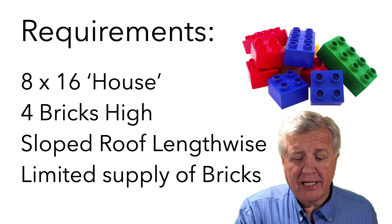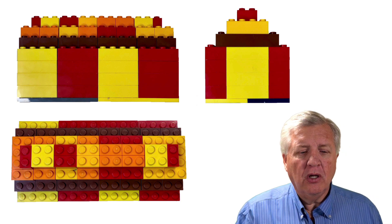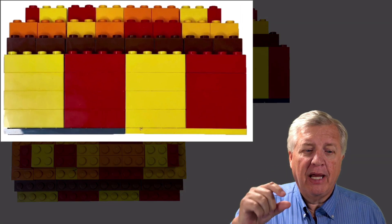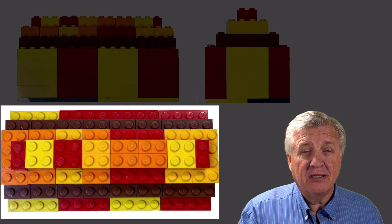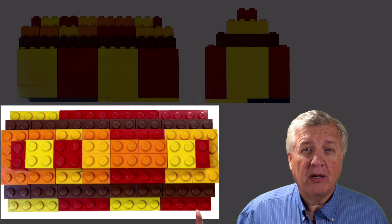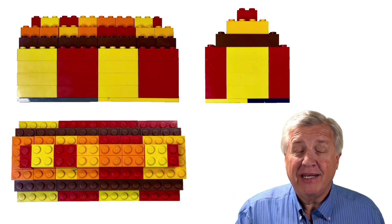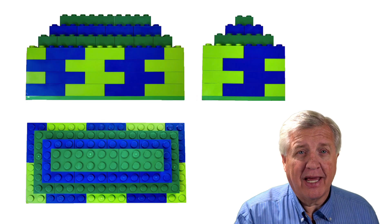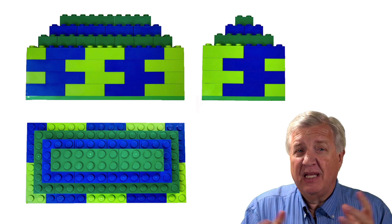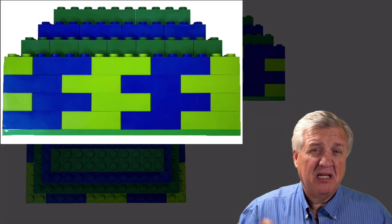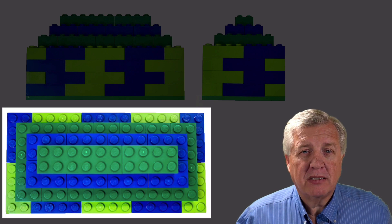Using Lego as an example, let's look at this design. This is a design my mom's friend's son would have made. They stacked the bricks up — it's pretty, it has the same colors all the way up and down. But anyone who's built Lego knows if you took this and squeezed it, it would fall apart in a heartbeat. It's not strong, it's not robust — it is brittle because of how it was put together. The exact same parts could be put together in a different way, and both designs meet the same requirements: eight bricks by 16, four stacked high, sloped roof. And yet one version is much more robust and strong.